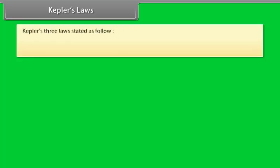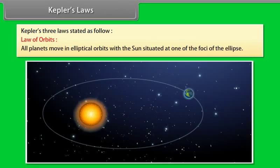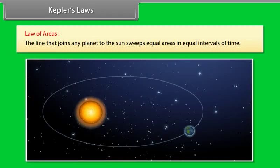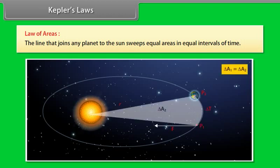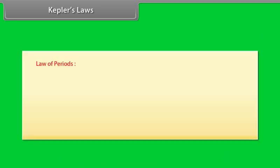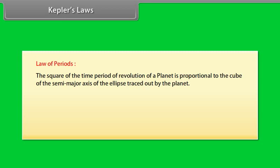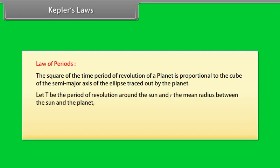Kepler's law. Kepler gives three laws. They are stated as Law of orbits: All planets move in elliptical orbits with the sun situated at one of the foci of the ellipse. Law of areas: The line that joins any planet to the sun sweeps equal areas in equal interval of time. This law comes from the observation that planets appear to move slower when they are farther from the sun than when they are nearer. Law of periods: The square of the time period of revolution of a planet is proportional to the cube of the semi-major axis of the ellipse traced out by the planet. Let T be the period of revolution around the sun and r the mean radius between the sun and the planet. T square is directly proportional to r cube. T square is equal to kr cube.